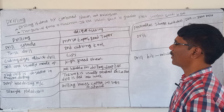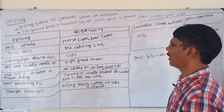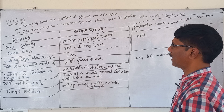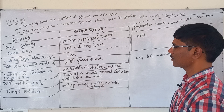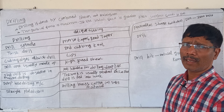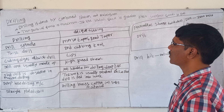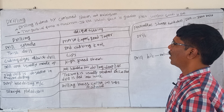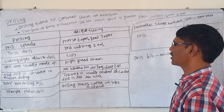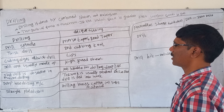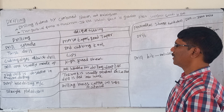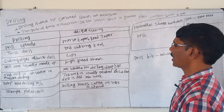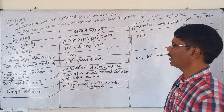Drilling comes under the category of oblique cutting. The drill spindle is made up of a taper called Morse taper or Reed taper. In drilling, we use a twisted drill. A twist drill is a type of end cutting tool. The cutting edge of the twist drill can also be called as lips. Drills are usually made up of high speed steel.